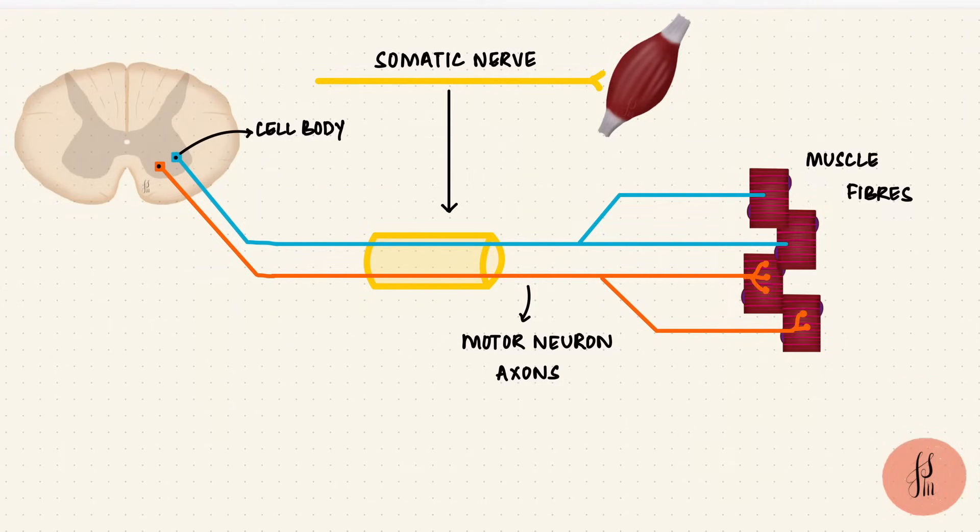At its termination, the axon branches and ends in these tiny little buttons called terminal buttons. So one neuron can innervate multiple muscle fibers, usually at the center of each fiber.